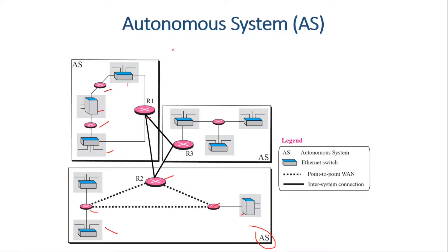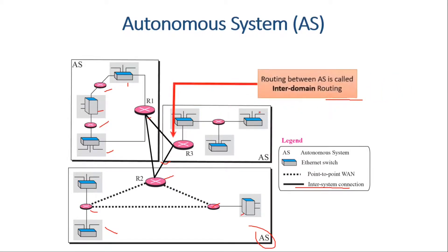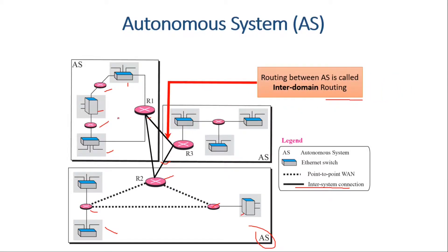These autonomous systems are connected to each other through inter-system connections. If you want to route inside an autonomous system, this is known as intra-domain routing. If we want to route between autonomous systems, this is known as inter-domain routing.